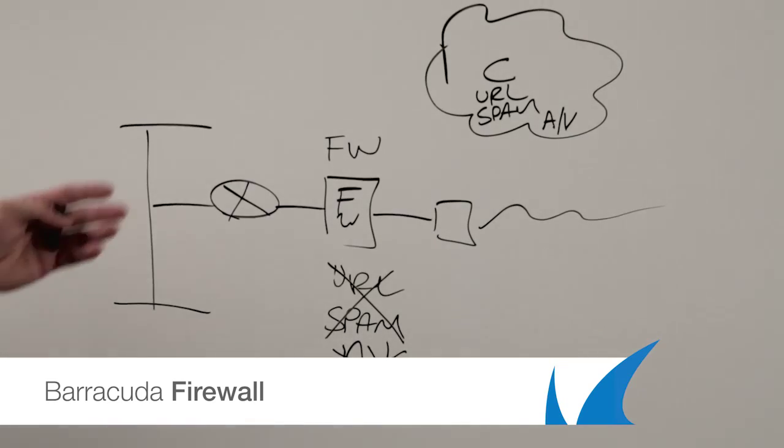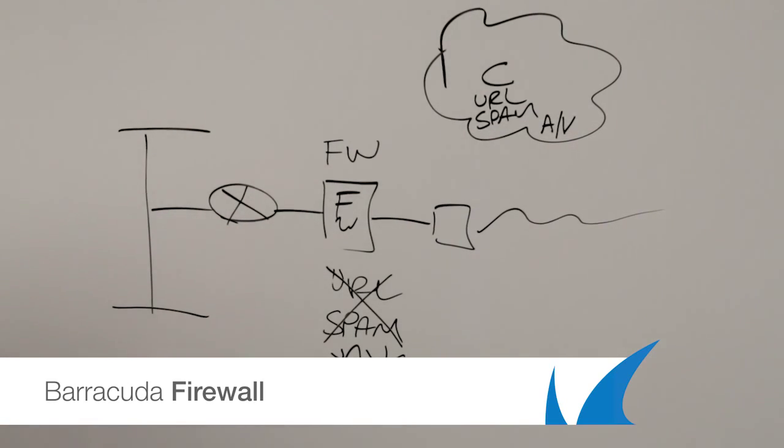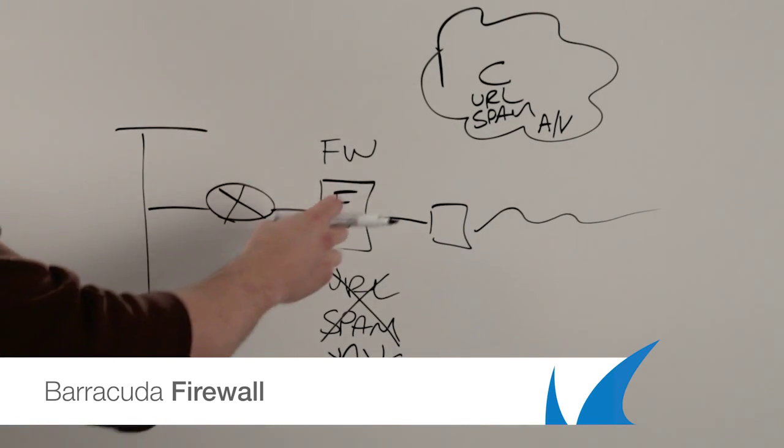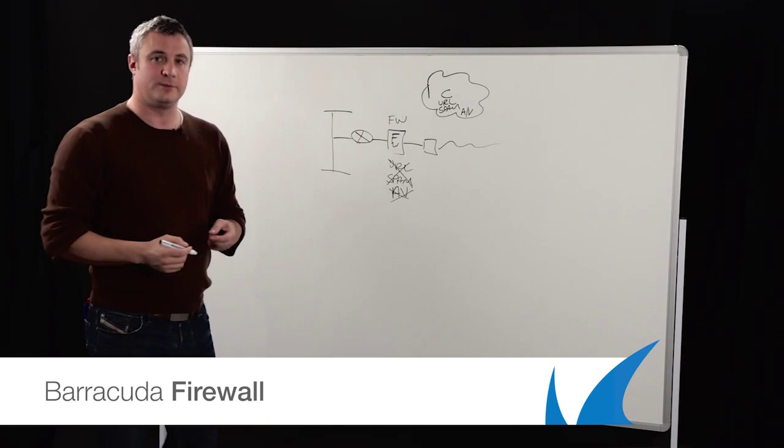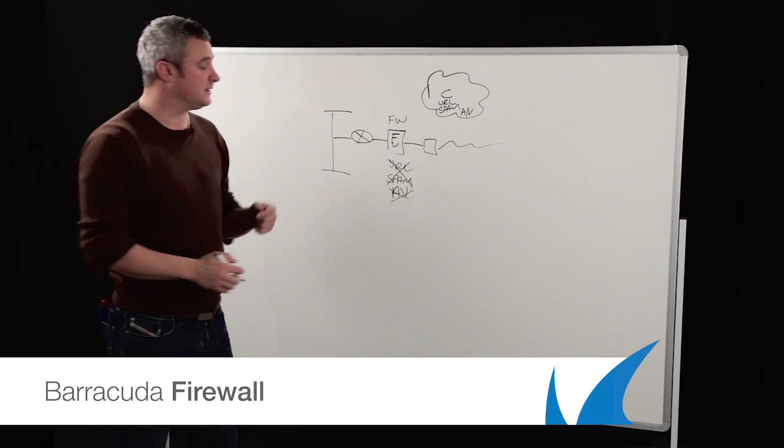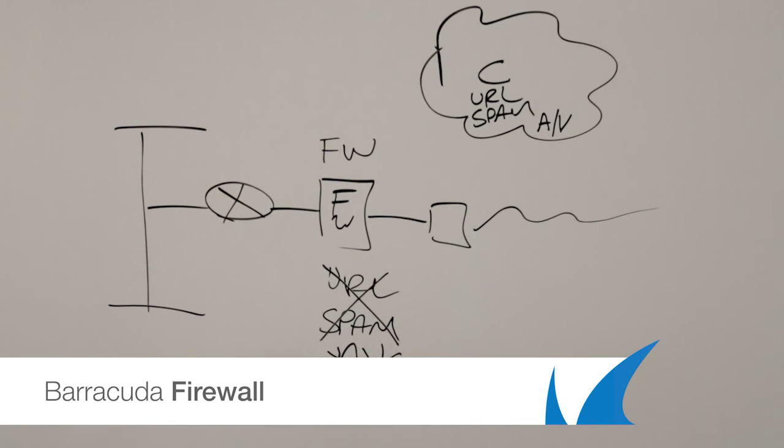This means the administrator configuring the firewall doesn't have to compromise on performance to have the same features for content security. A lot of the times a UTM firewall would be dramatically over spec'd because these features took up most of its CPU performance.